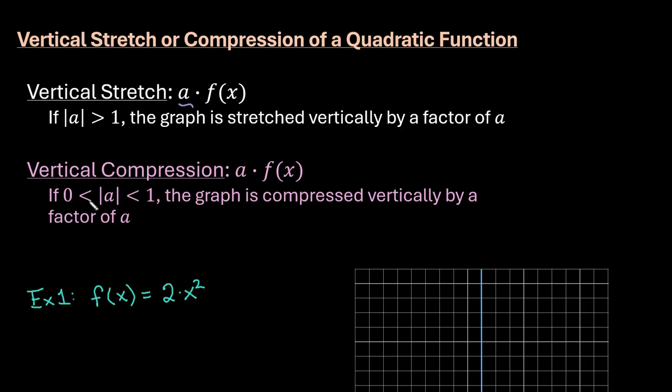If the value in the front is between 0 and 1, then you are going to compress it vertically by a factor of a.